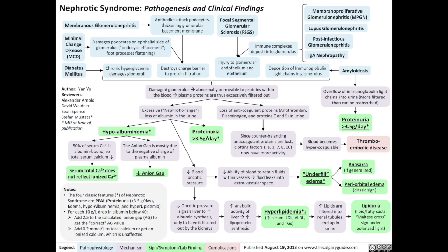Second, minimal change disease, which also damages the podocytes on the epithelial side of the glomerulus in a process called podocyte effacement — flattening of the foot processes of the podocytes. This also destroys the charge barrier to protein filtration.